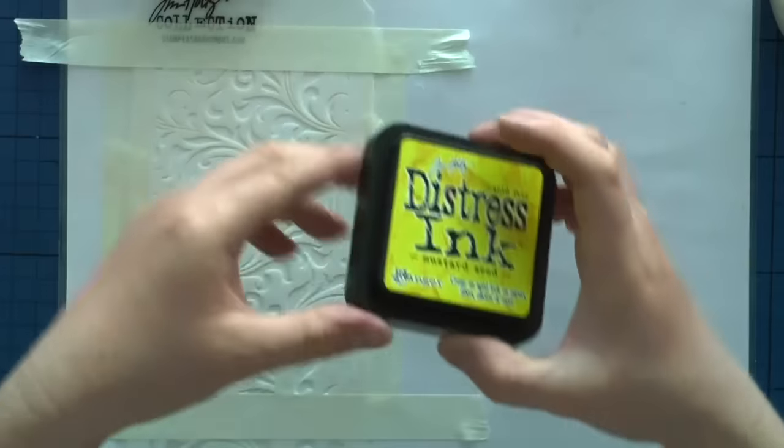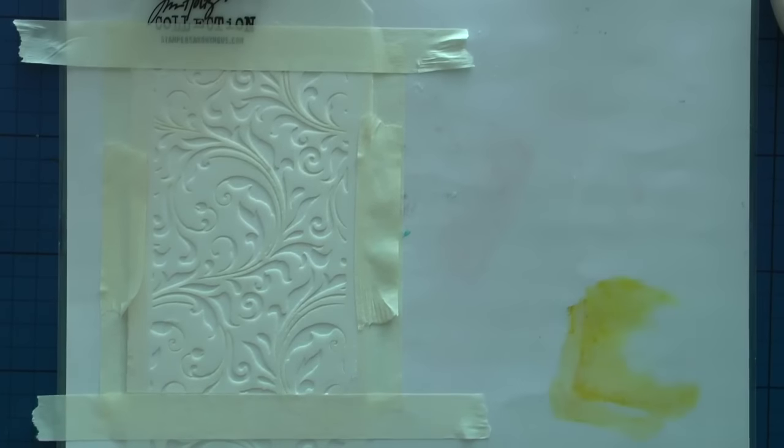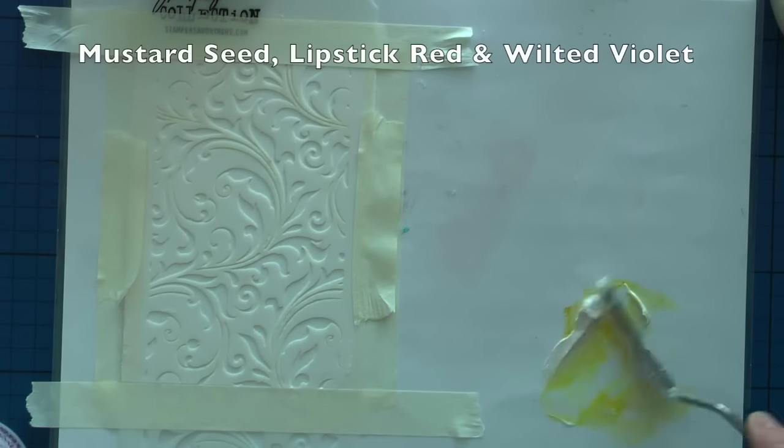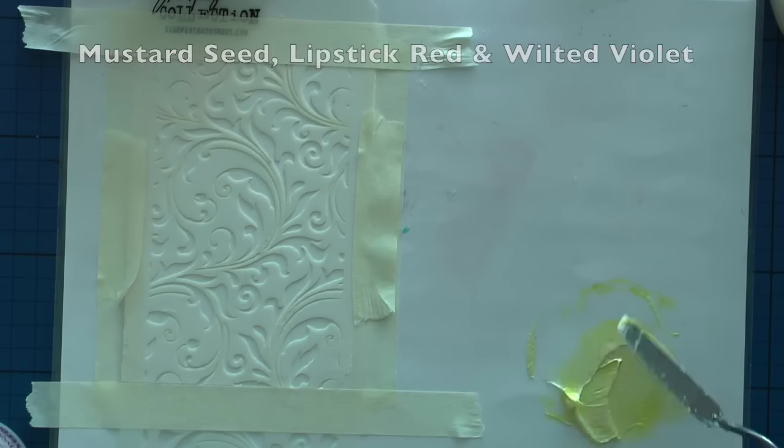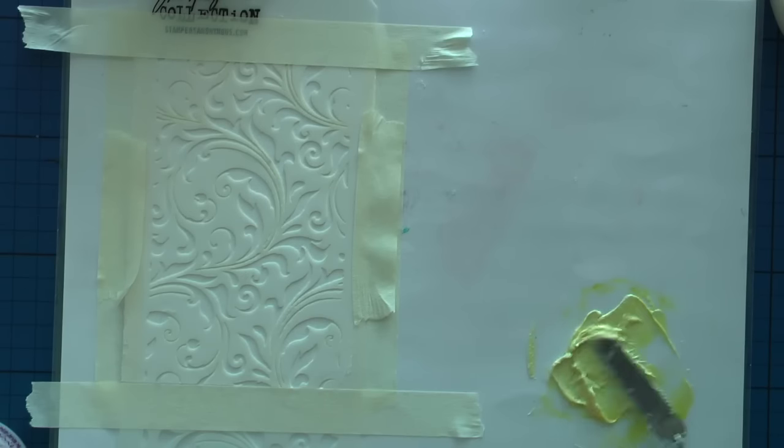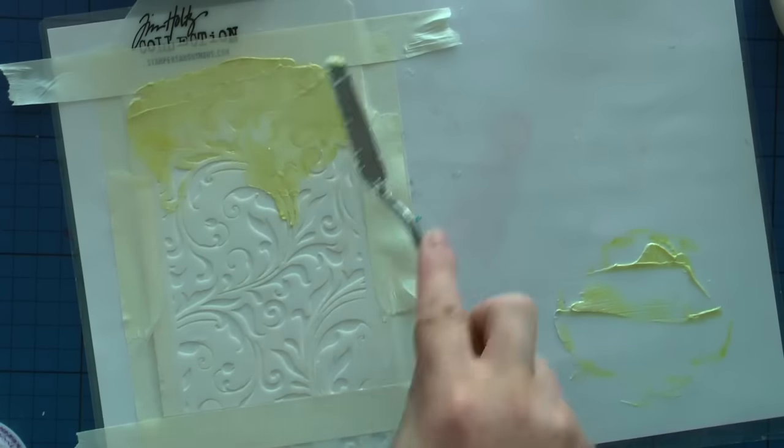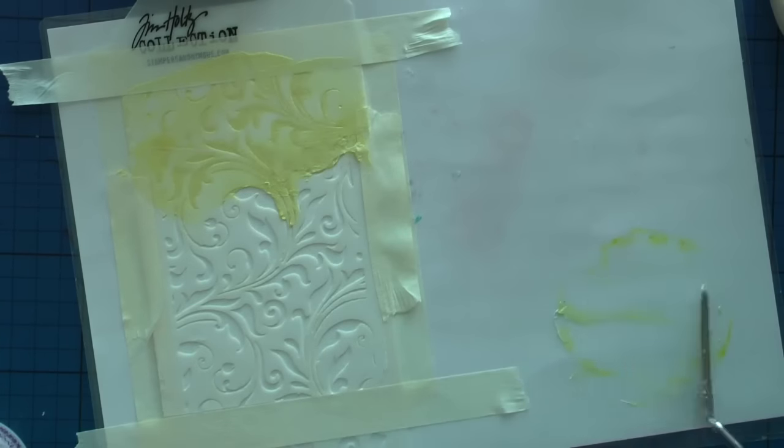For the next card, I used pearl embossing paste along with my distress inks. I used mustard seed, lipstick red, and wilted violet distress inks, mixing them with the pearly embossing paste. Then I mixed them and covered the surface of the stencil, and I thought it turned out really beautiful.